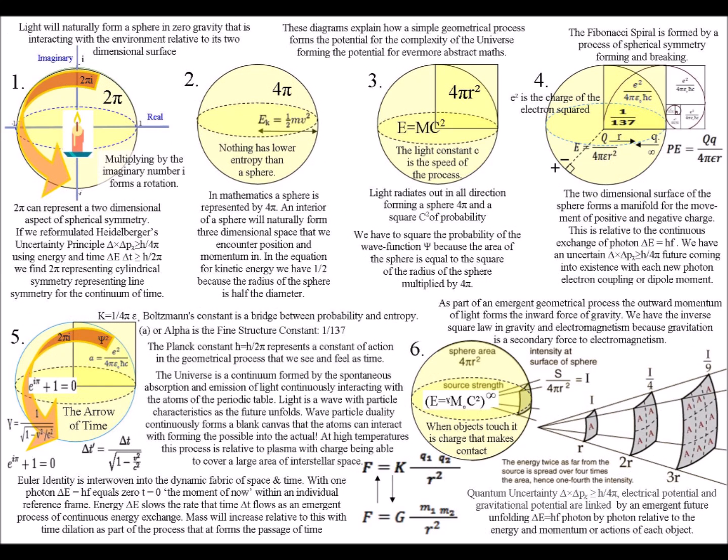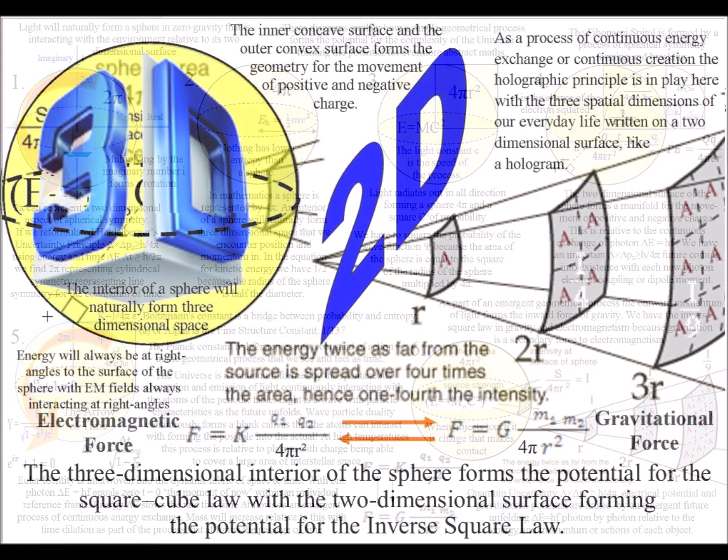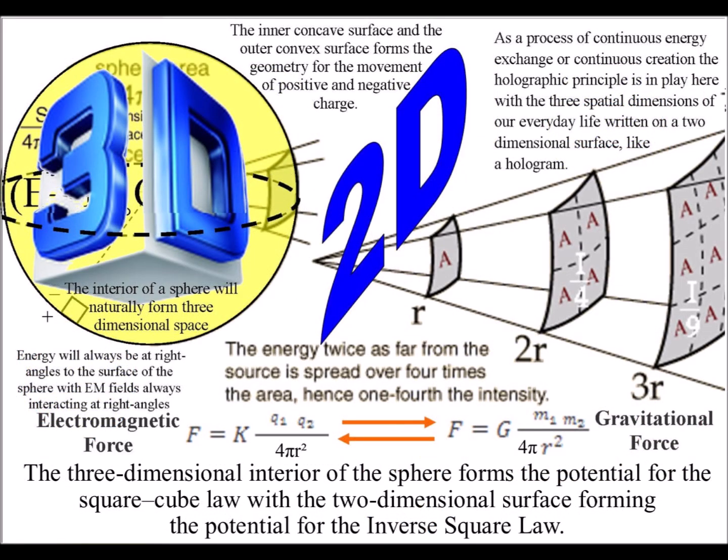This geometrical process forms the inverse square law. We have to square the radius because the process is relative to the spherical surface. As part of an emergent process, three-dimensional space will form relative to this geometry, forming the potential for the square-cube law.